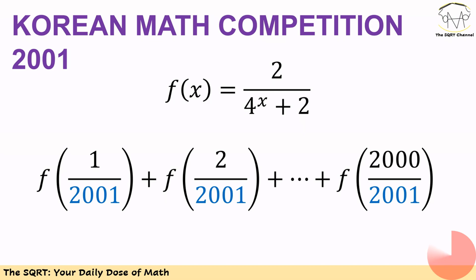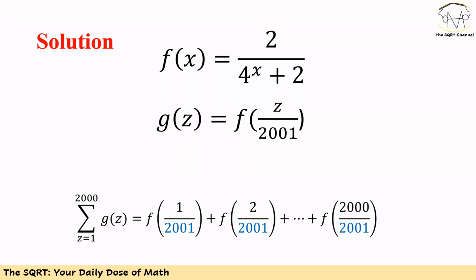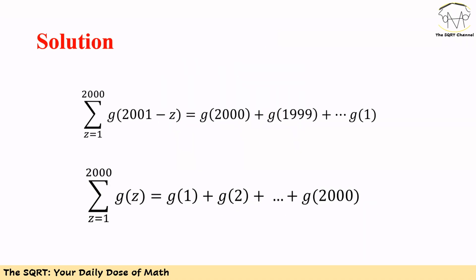Before moving forward, make sure that you pause the video to think about this problem. To solve this problem we are going to start with a notation. We want to find f of 1 over 2001 plus f of 2 over 2001 up to f of 2000 over 2001. To write this sum as a Sigma, we define g of z as f of z over 2001. Then the whole expression can be written as Sigma g of z for z equal to 1 to 2000.